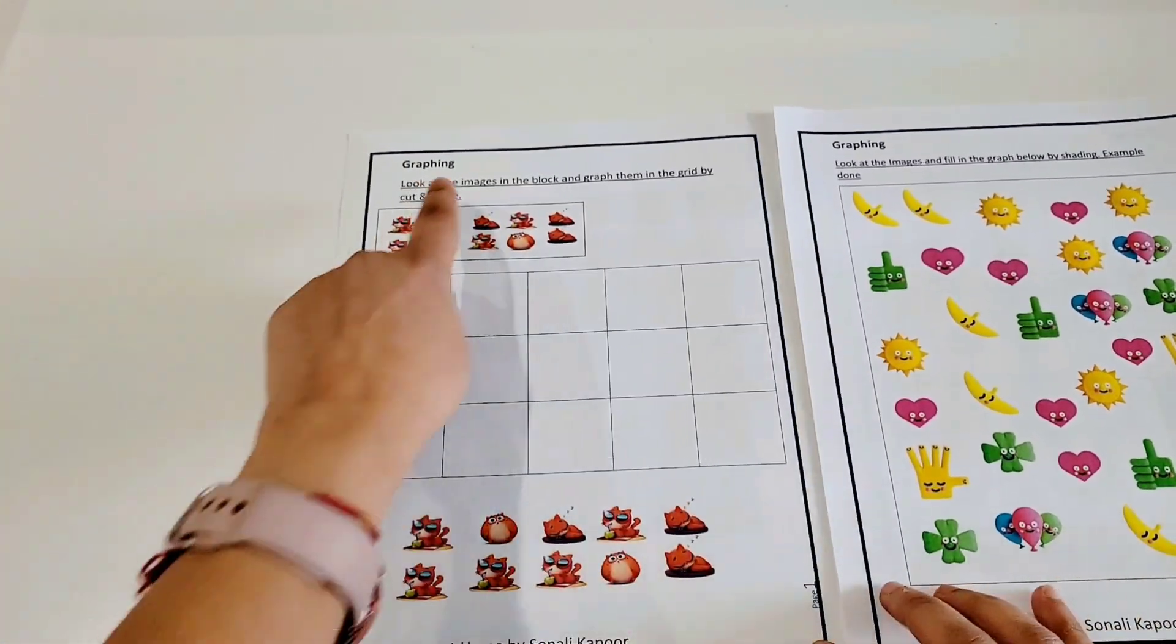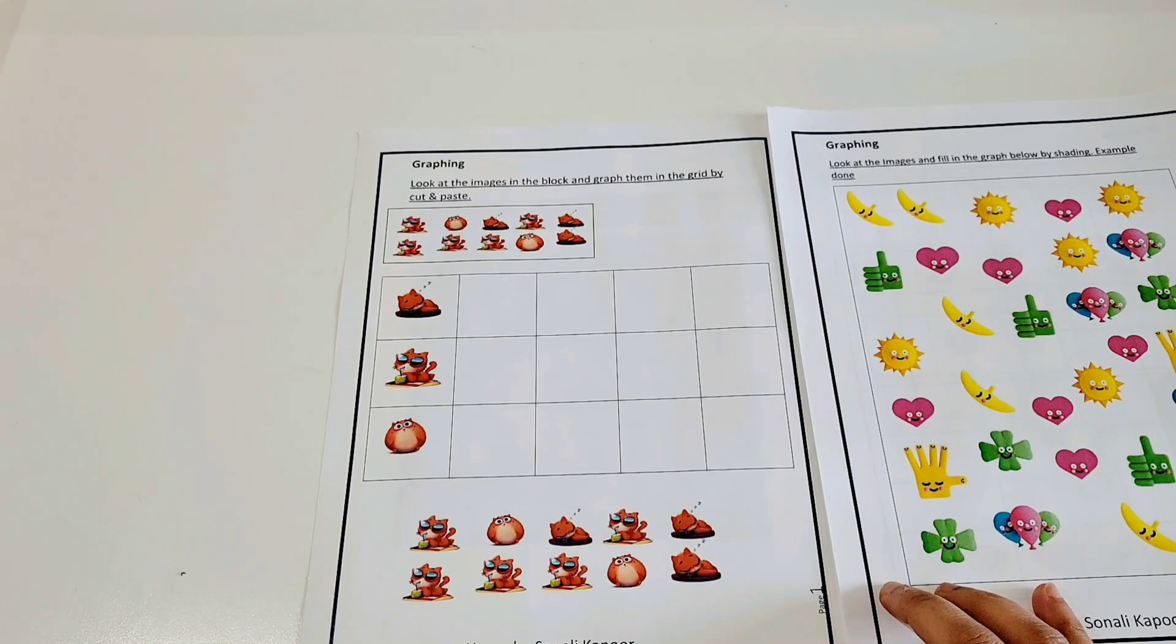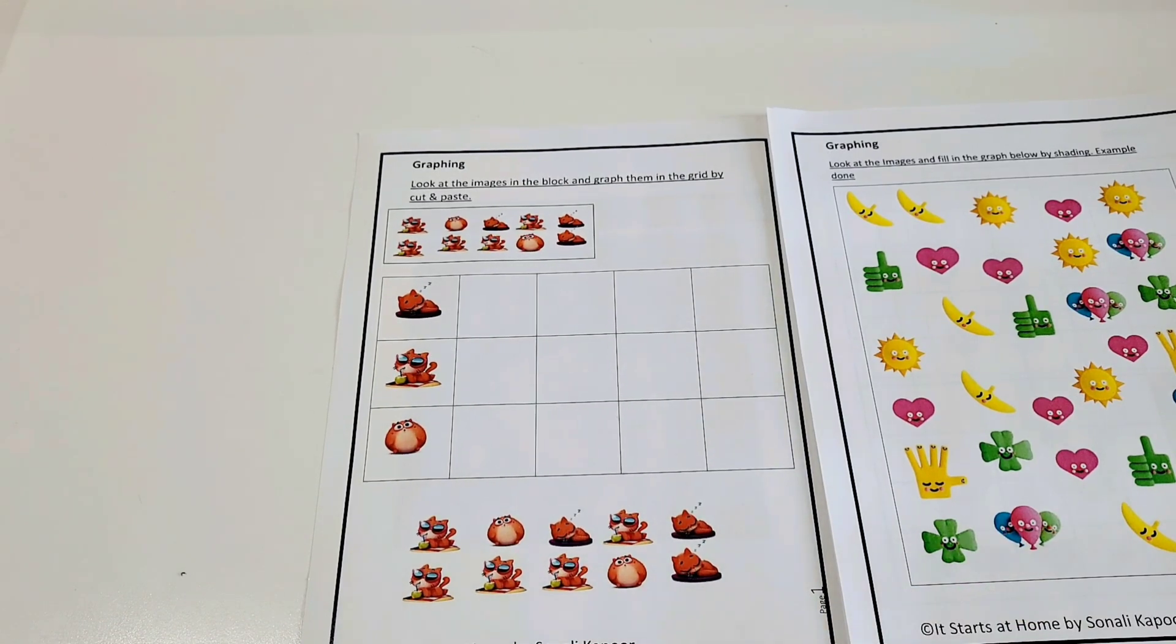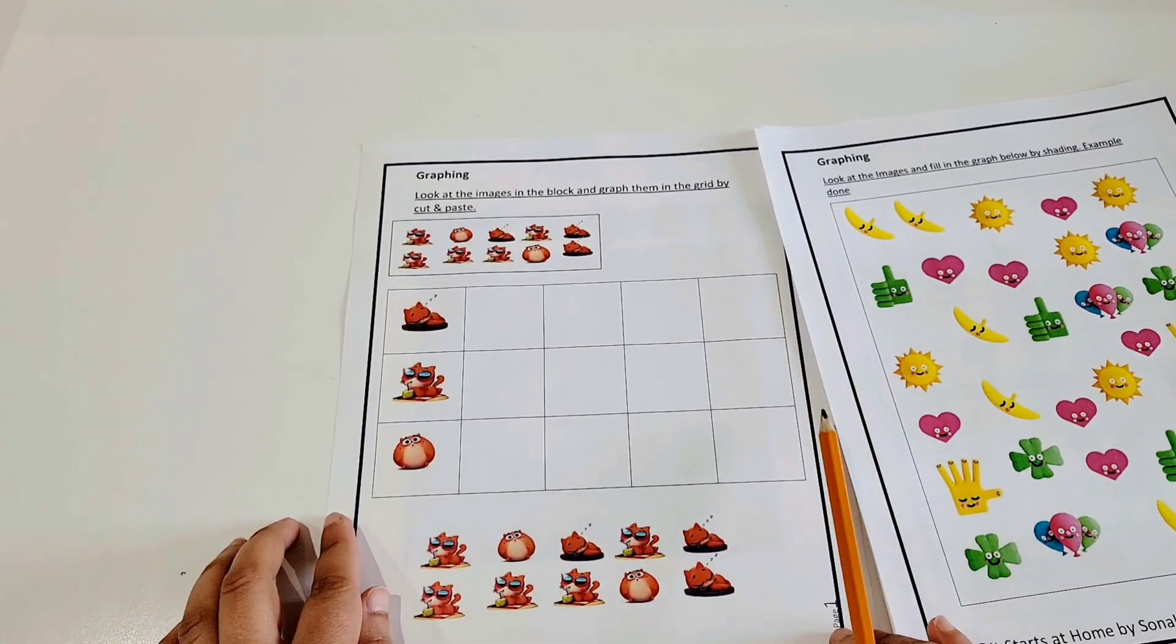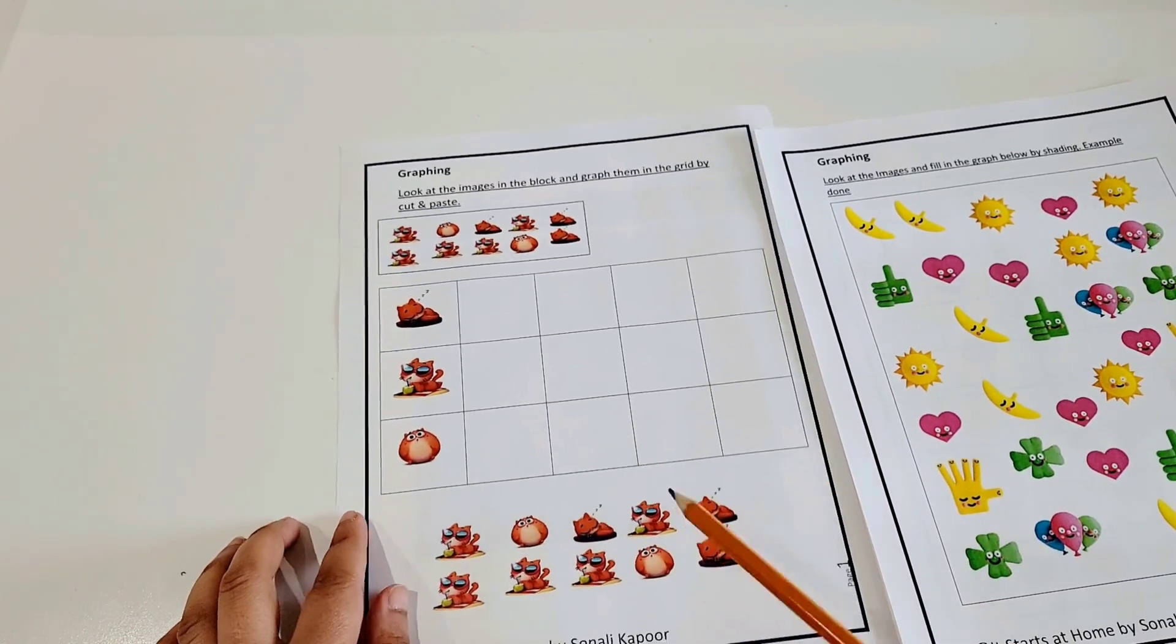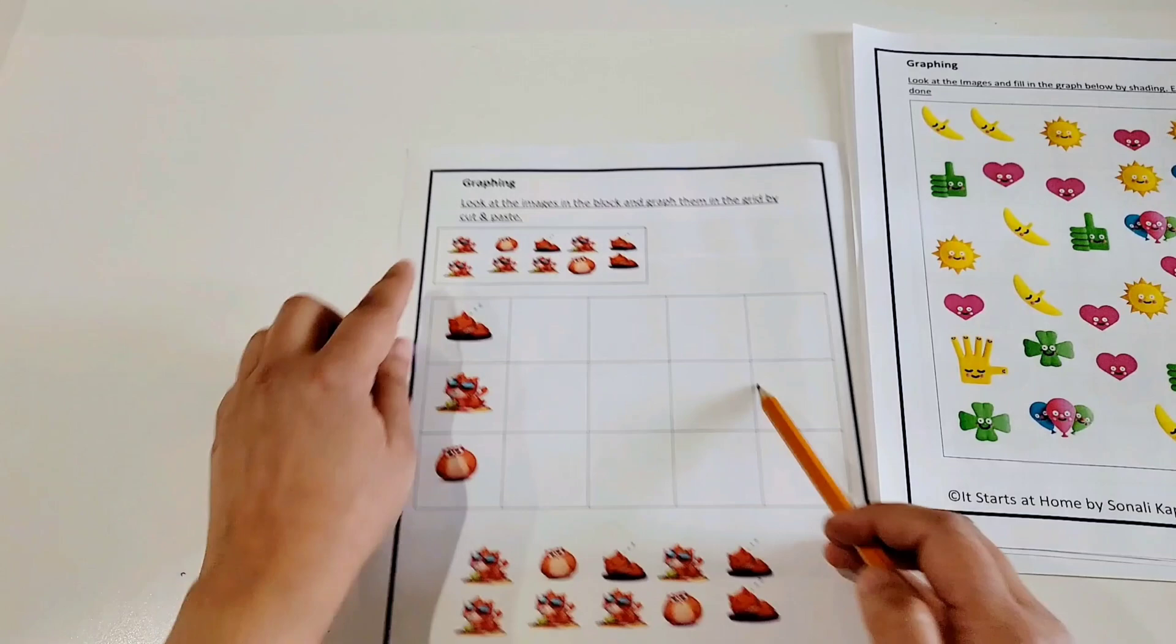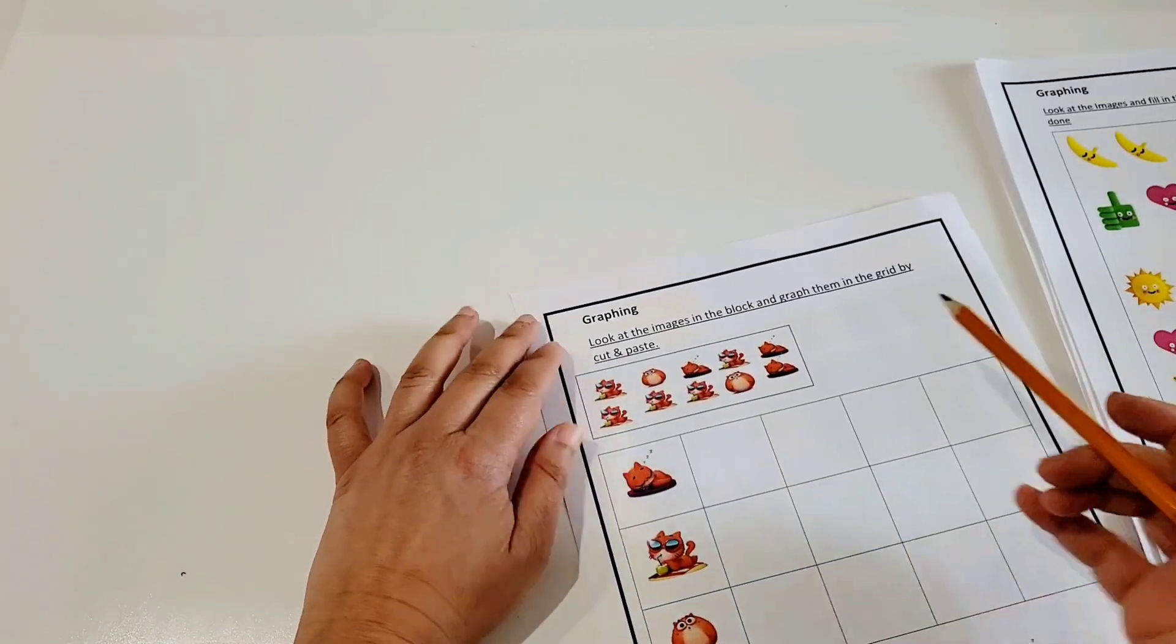So in this activity guys, the first one is look at the images in the block and graph them in the grid by cutting and pasting. So you have these pictures right here, and then you have to paste them here. So this is the bigger picture and I'm going to show you how.